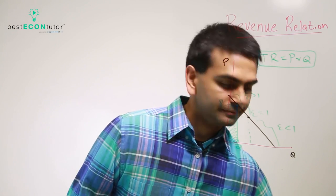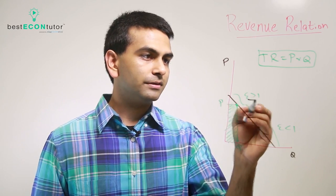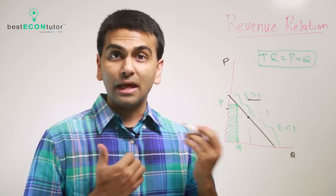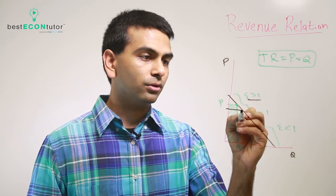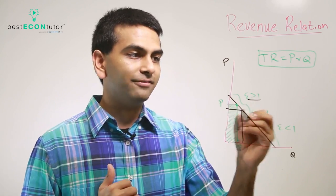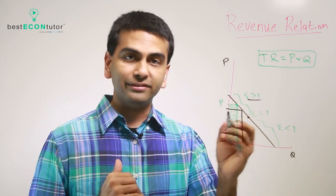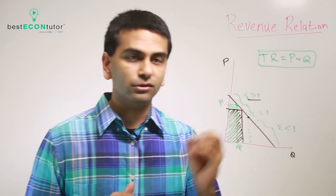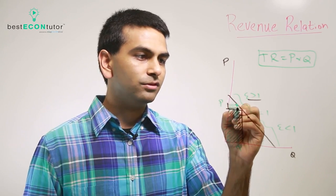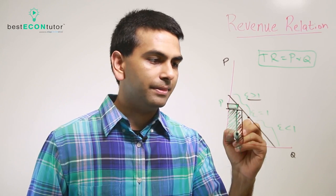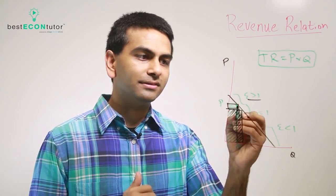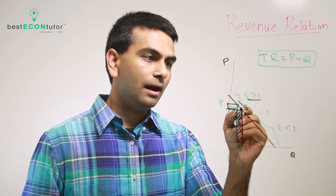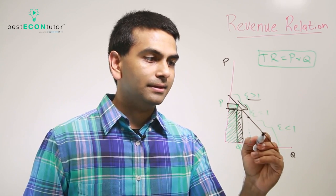If you're on the elastic portion of the demand curve, your customers are sensitive. If you lower your price, you're going to sell a whole lot more, so much so that your total revenues end up going up. We can generalize: on the elastic portion of the demand curve, lowering your price necessarily raises your total revenue. You can break this down into the price effect — the revenue you lose — and the quantity effect — the revenue you gain. When demand is elastic, the quantity effect outweighs the price effect, so revenues go up as you move down the elastic portion.